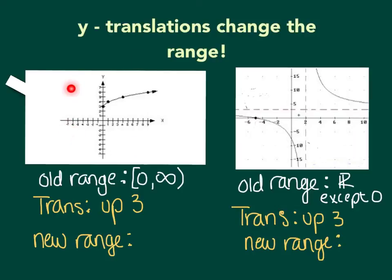On the left, you'll see a translated square root function. The old range was 0 to infinity. And we're going to translate it up 3 units. So this has been moved up 3, and that's going to make our new range 3 to infinity. So notice that an up 3 translation, a positive 3 translation, makes the range positive 3 to infinity.